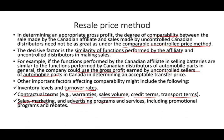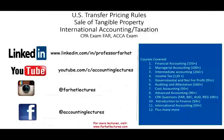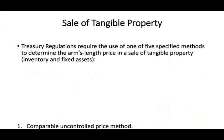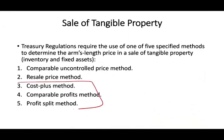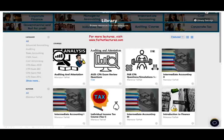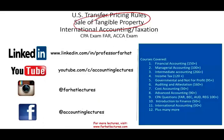Additional factors for the resale price method include sales, marketing, advertising programs, services including promotional programs and rebates, and the level of the market — whether it's wholesale or retail. It's never apple to apple; you always have to make additional adjustments. When the company determines the price, they have to document it properly and show evidence in case they are audited. In the next session, we're going to look at the other three methods: cost plus, comparable profit methods, and the profit split method. I invite you to visit my website for additional resources. Good luck and study hard.